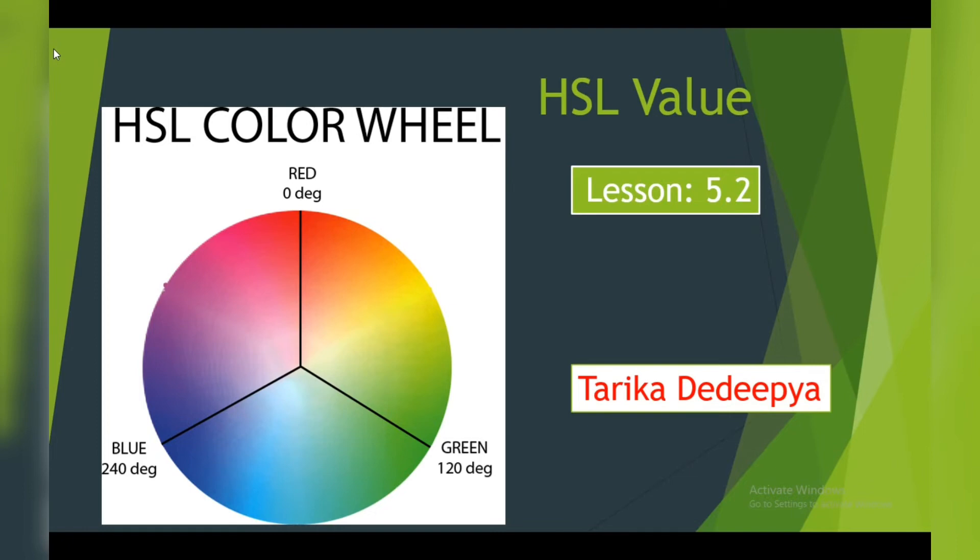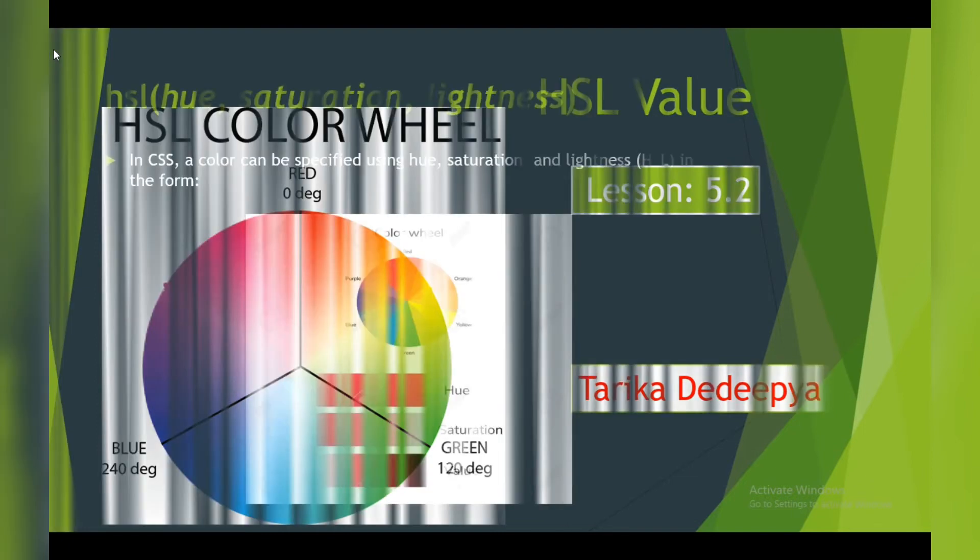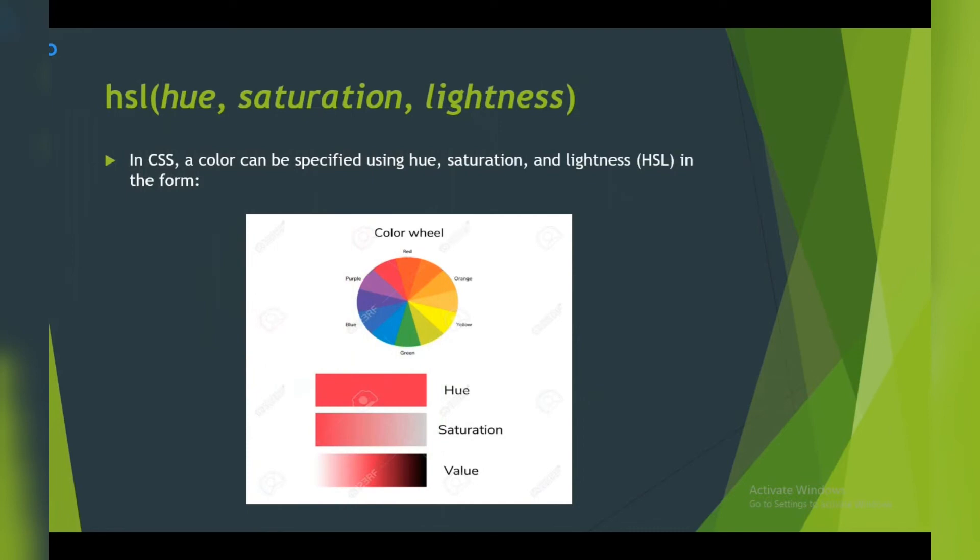Going to the topic now: HSL full form is Hue, Saturation, Lightness. In CSS, a color can be specified using HSL in the form. In this image, I have given you a color wheel. The color wheel is HSL. You can see the HSL color wheel.